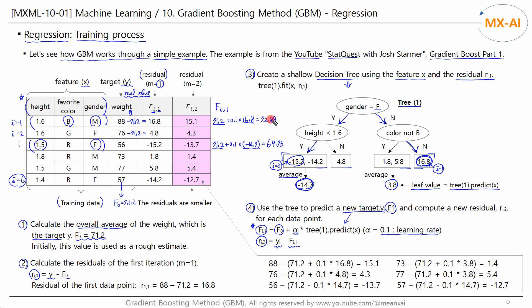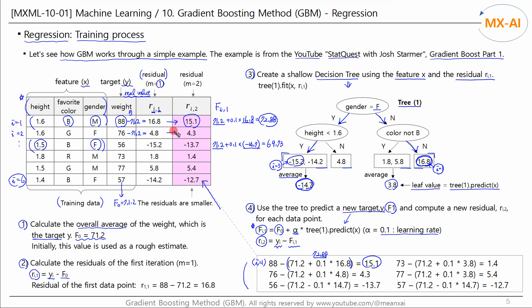Using the new predicted Y and the actual Y value, we compute the second residuals. For the first data point, F1 is 72.88, so the second residual is 15.1. We calculate new residuals for each data point in this way. The new residuals are smaller than the previous ones, and the estimates for each data point are closer to the actual values than the initial estimates.